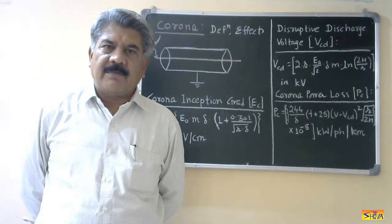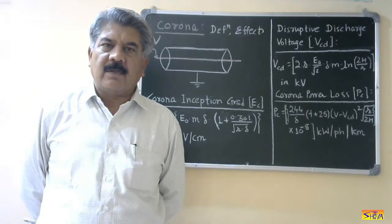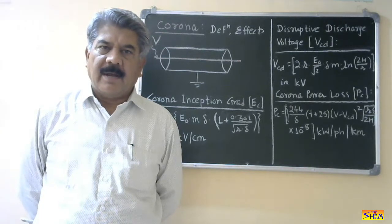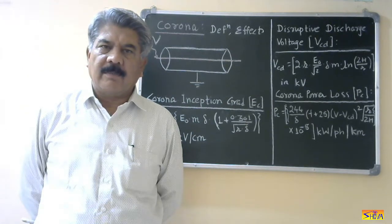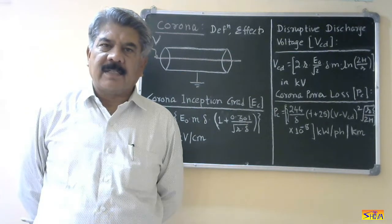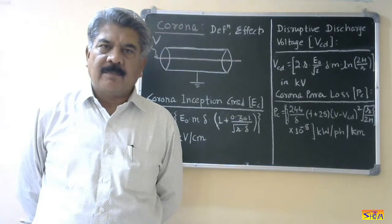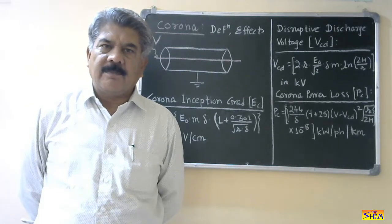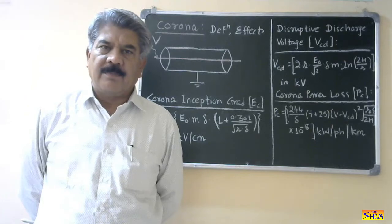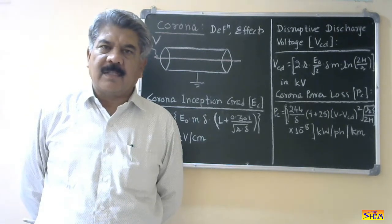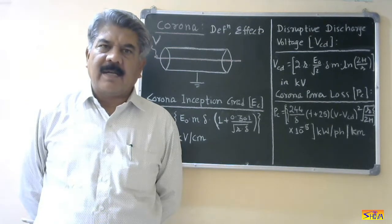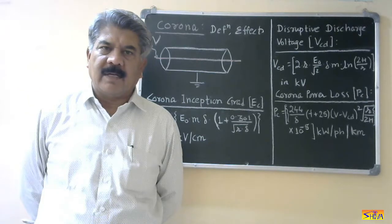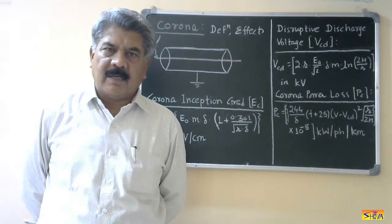Non-uniform electric field is further classified as moderately non-uniform electric field and highly non-uniform electric field. In case of highly non-uniform electric field, partial discharge occurs. Partial discharge means the discharge does not bridge the gap between the electrodes — it bridges partially the gap. Therefore, the name is partial discharge, and that occurs in case of highly non-uniform electric field.